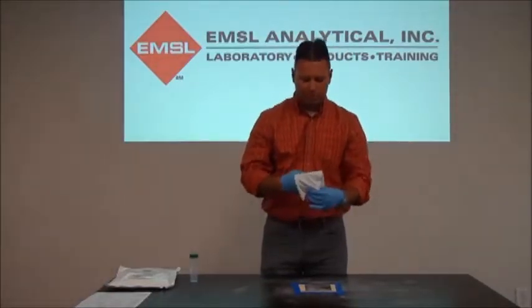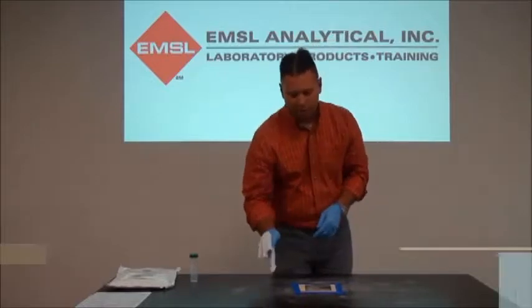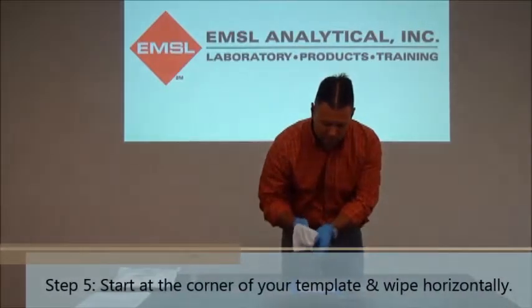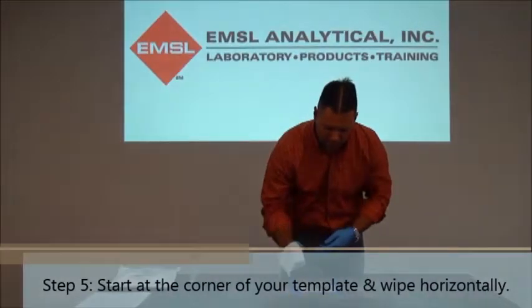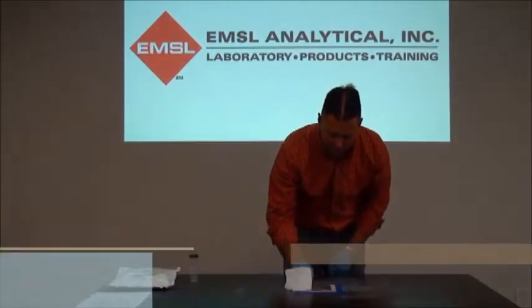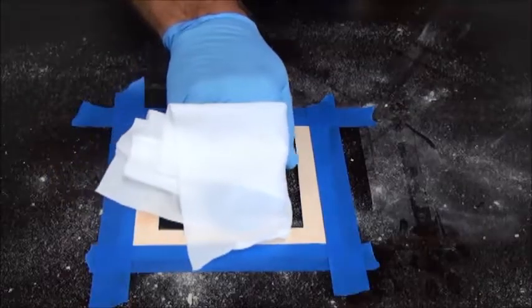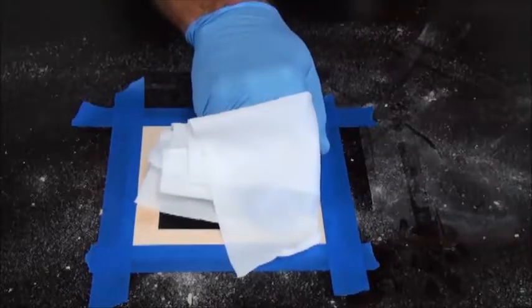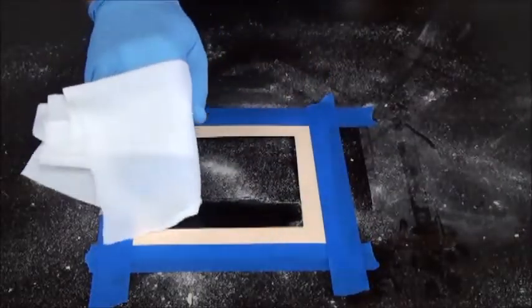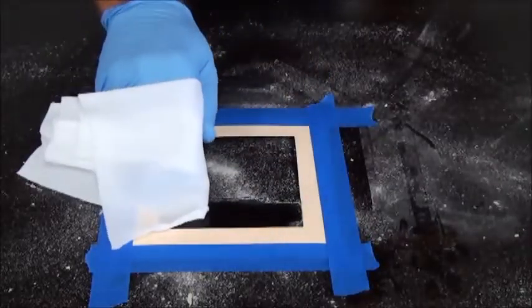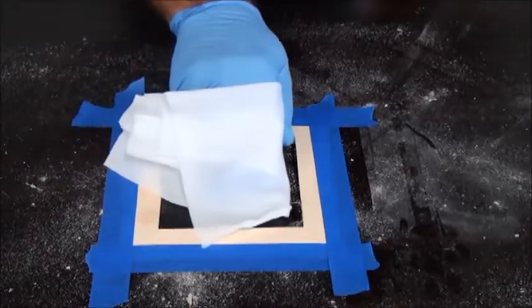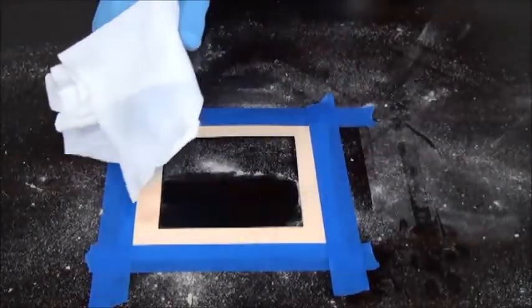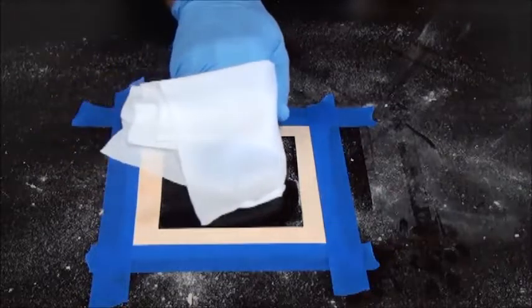Fold the clean room wipe over your hand and, starting in the corner of your template, gently wipe using finger pressure. Once you've reached the side, take it back to the beginning with a slight overlapping of your original pass and wipe again. Proceed down the template each time with an overlap.